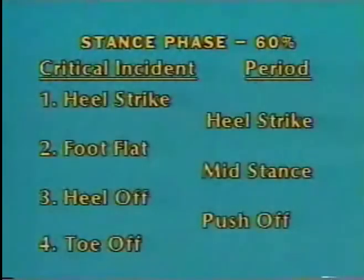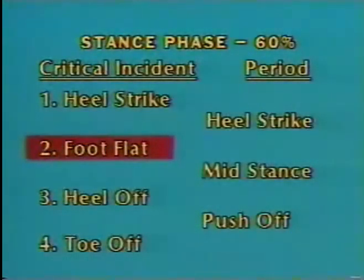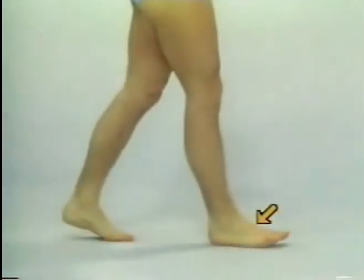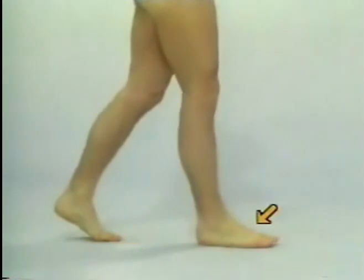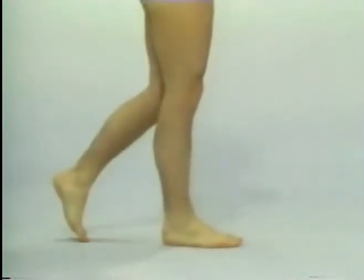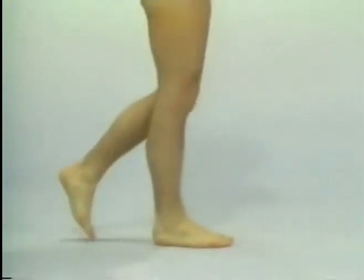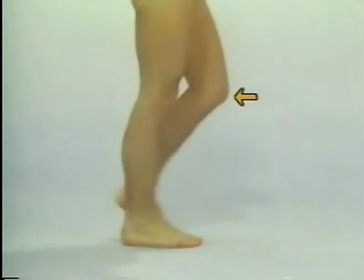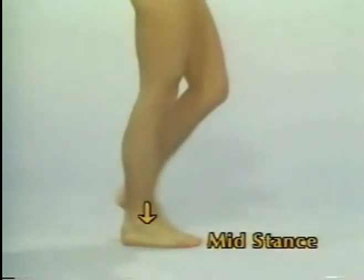Foot flat. Following heel strike, there is then controlled relaxation of the foot and ankle dorsiflexors to allow the forefoot to come into contact with the ground. As the opposite extremity progresses through the swing phase, the body weight becomes centered momentarily over the supporting foot and this period is known as mid stance.